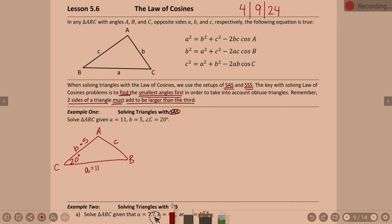You would not be able to do law of sines here because in order to do law of sines you have to have a pair — big A little a, big B little b, or big C little c. Since we don't have any of those pairs, this is a law of cosines problem. Since we're given angle C, we're going to use the third variation: c squared equals a squared plus b squared minus 2ab times cosine of C.